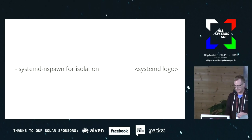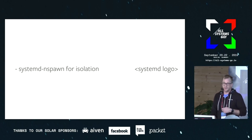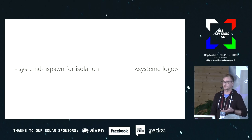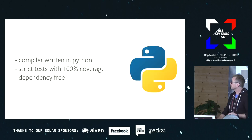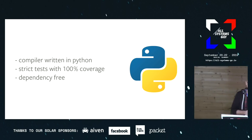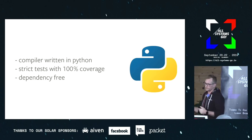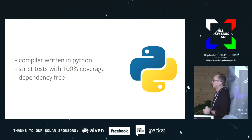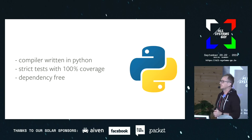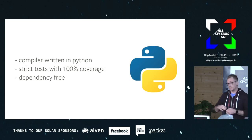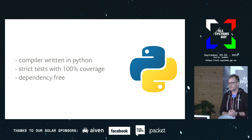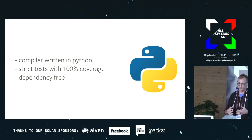We use systemd for isolation. NSpawn is the thing we use to run everything and build the image itself. We use private networking — we turn off networking and make sure nothing can talk to anything else. We use it for all the bind mounting and read-only bind mounts and protecting certain mounts during the build. The compiler is written in Python 3. We have strict tests with 100% coverage — one of the goals of the project is that we will always have 100% coverage on the codebase. It's also dependency-free: no third-party dependencies outside of Python standard library. We also don't rely on the systemd on the host to do the build, so we can build in a pretty constrained environment.